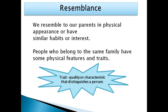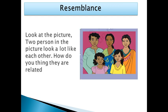Next is resemblance. We resemble our parents in many ways, like physical appearance, similar habits, and interests — these all come from family. People who belong to the same family have some physical features or traits. Traits are the qualities or characteristics that distinguish a person from others. Looking at this picture, two persons look a lot like each other — the man and the daughter resemble each other.